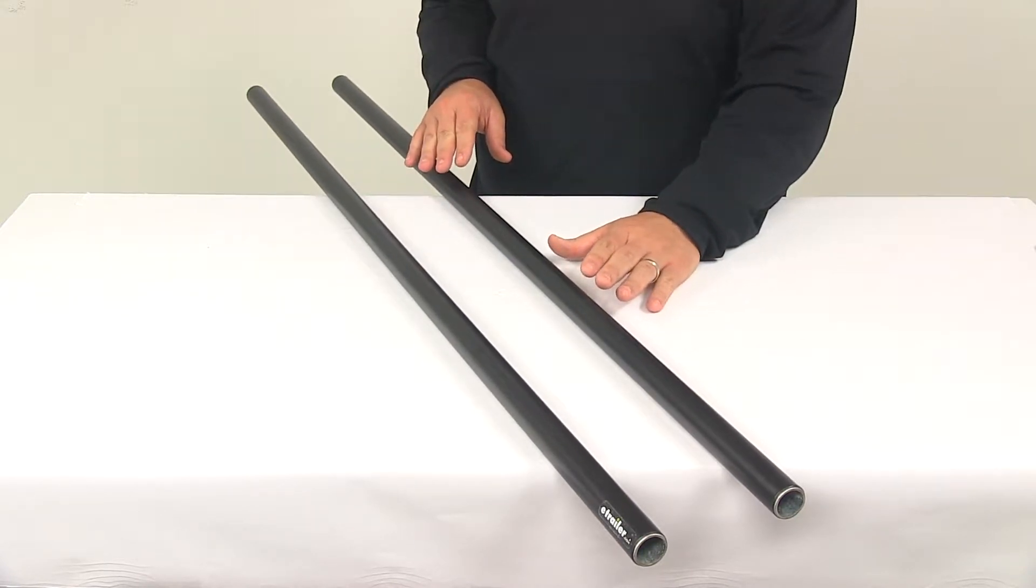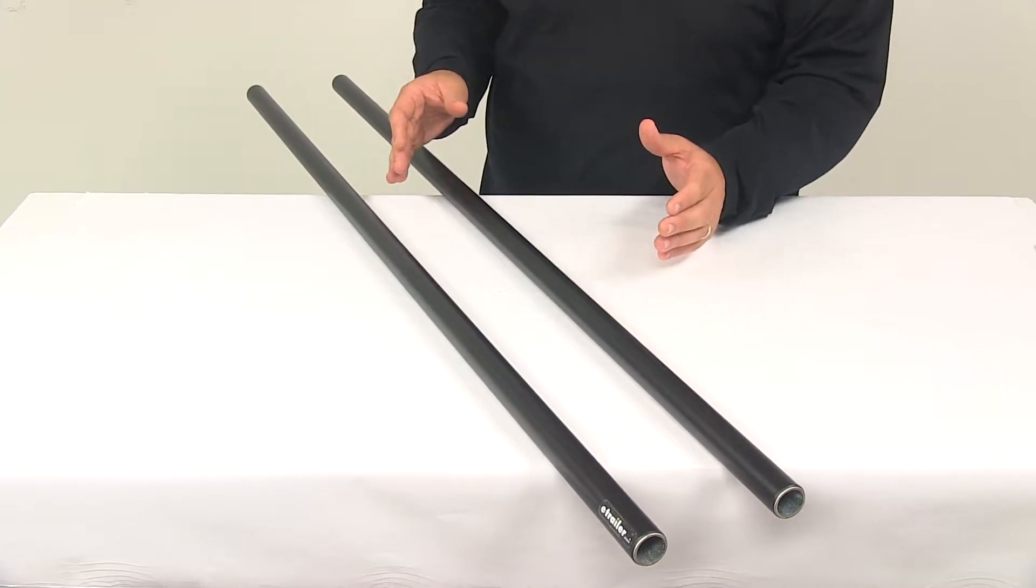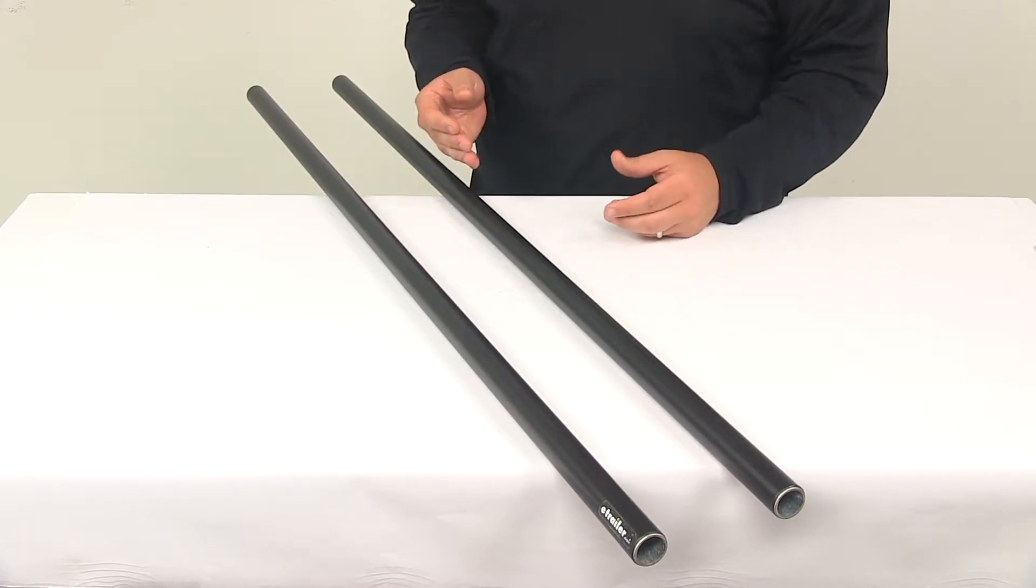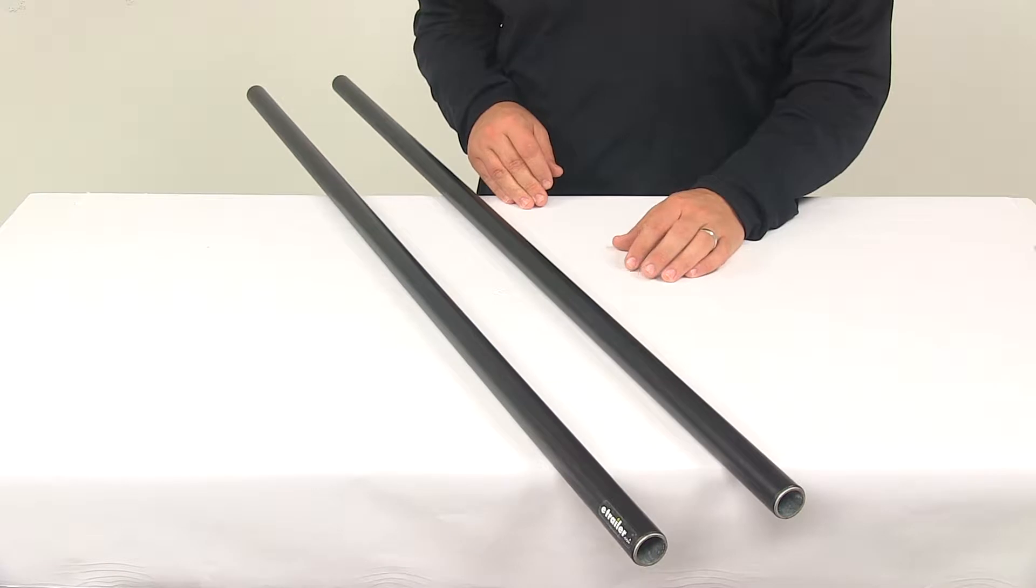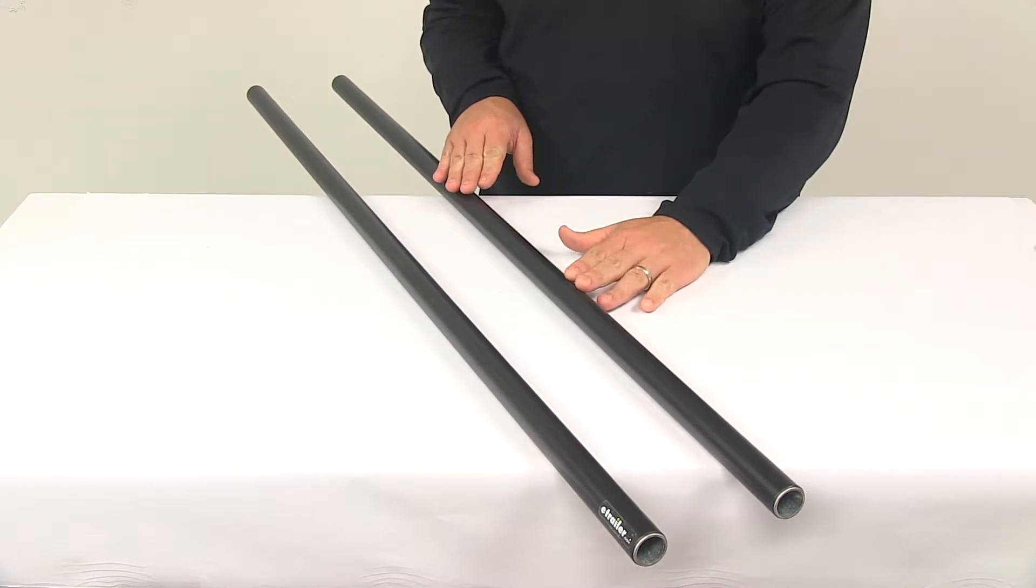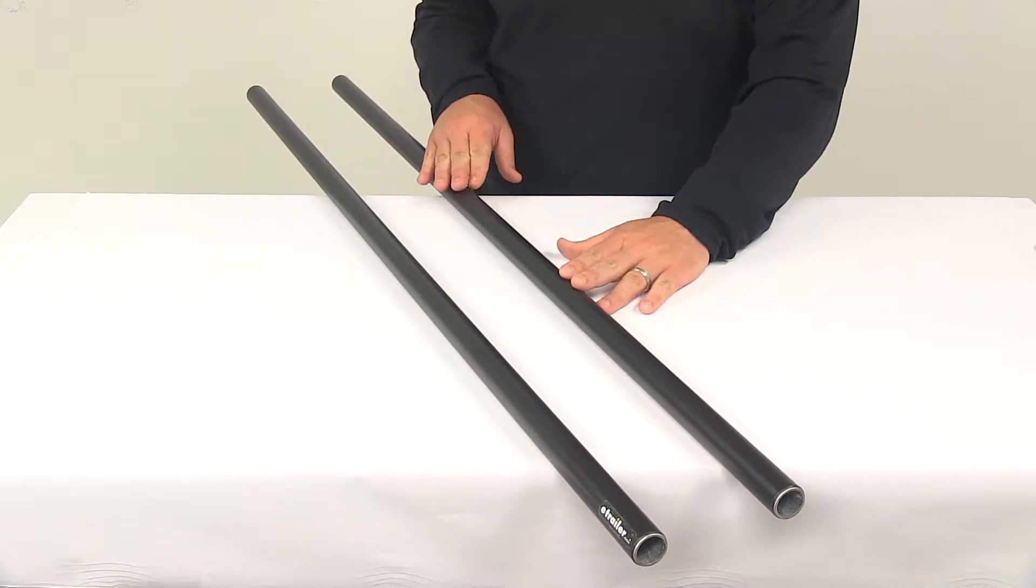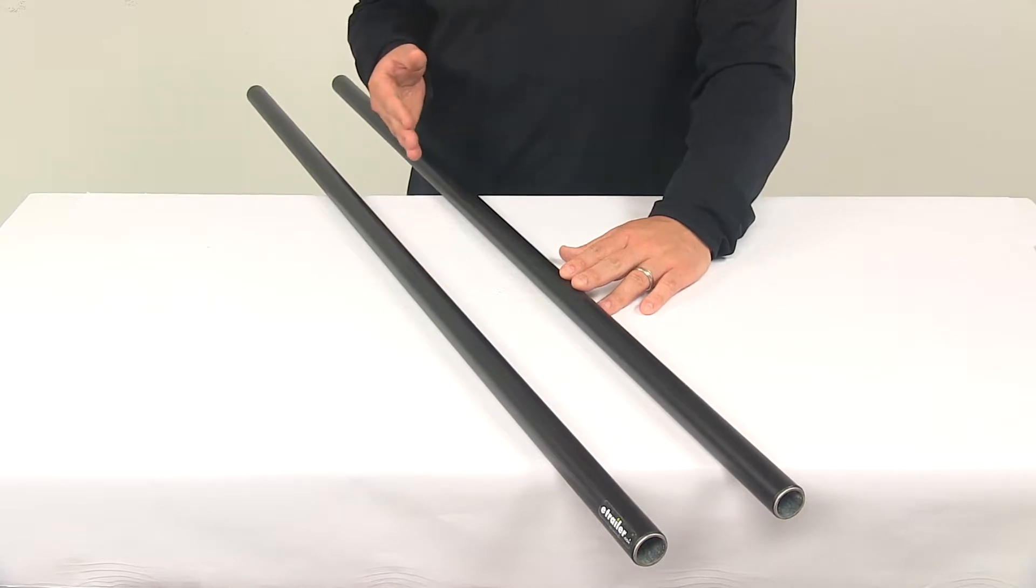You'll notice that they're a round design that's going to fit all Yakima towers. Towers are sold separately and they are available here at eTrailer.com. These bars provide stability to your roof mounted racks which allows you to carry the accessories that secure your gear.